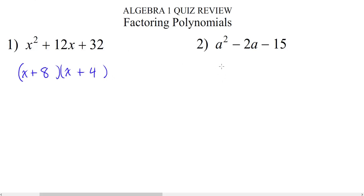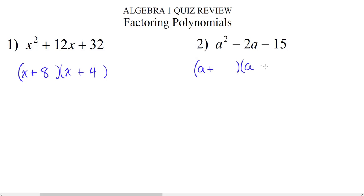Let's take a look at number 2. We have a squared minus 2a minus 15. Look at the third term — it's negative. Remember that the third term comes from multiplication. If we multiply two numbers together and get a negative answer, that means one of the numbers is positive and the other is negative. So this is going to be a plus something times a minus something.